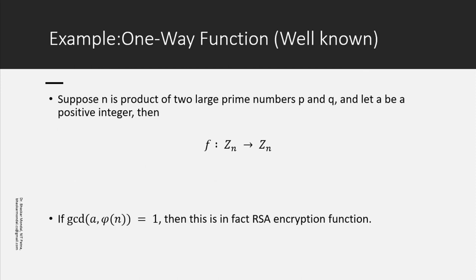A well-known expression: suppose n is the product of two large prime numbers p and q, and let a be a positive integer. Then f can be defined as a mapping from Z_n to Z_n. If gcd(a, φ(n)) = 1, then this is in fact the RSA encryption function, which is what is used in RSA encryption.